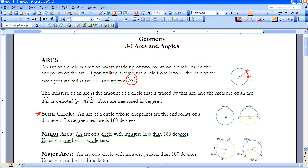We measure an arc by the little symbol m in front of the arc name in order to let us know that we want to measure it. And we measure it in degrees, just like we do angles.